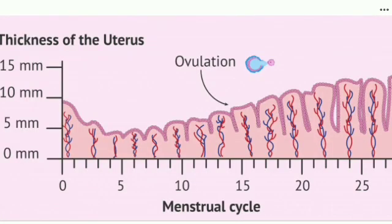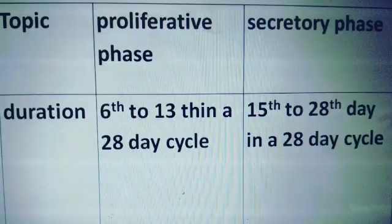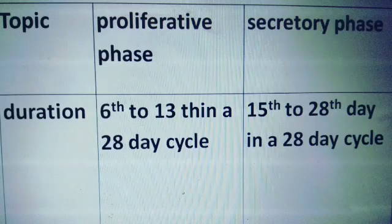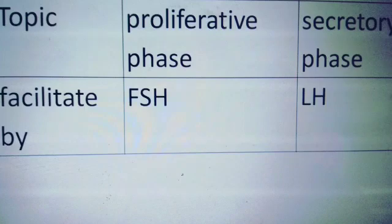This picture shows different stages of the menstrual cycle, and you can see the thickness of the endometrium gradually increases and is greater in the secretory phase. The duration of the proliferative phase is 6 to 13 days, while the secretory phase is 15 to 28 days. The proliferative phase is facilitated by follicle-stimulating hormone, and the secretory phase is facilitated by luteinizing hormone.